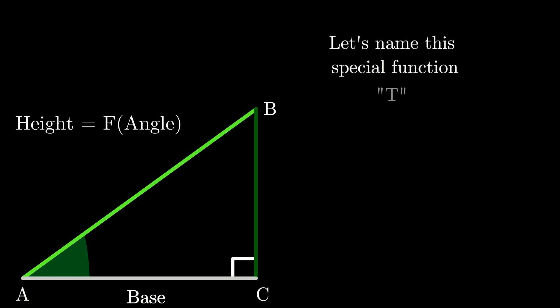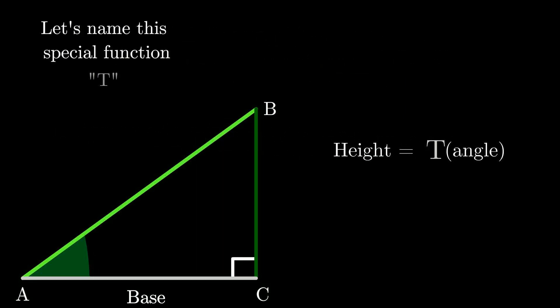So we give it a unique name. Let us call this unique function as T. So we say that height equals T of angle. When we put in the angle of the triangle inside the function T, it gives back the height of the triangle. All is good.